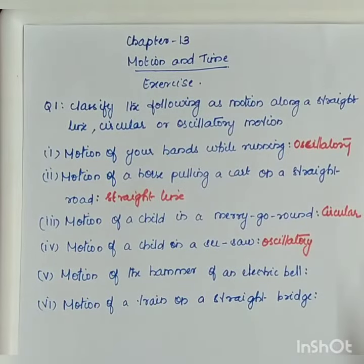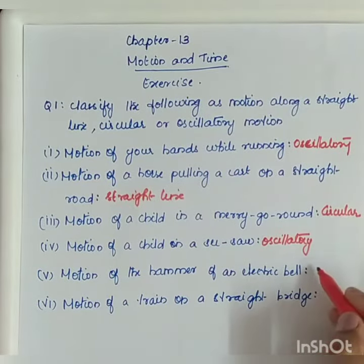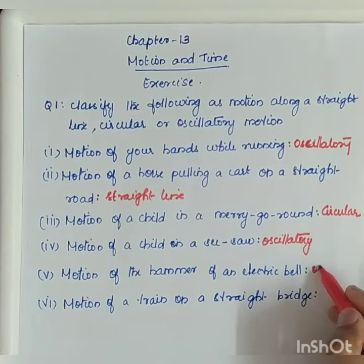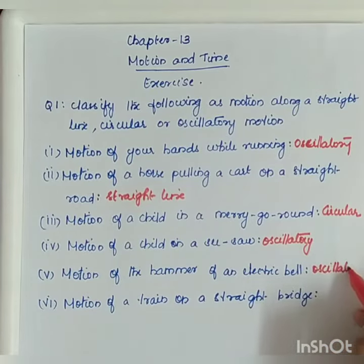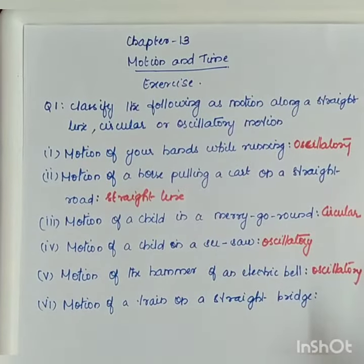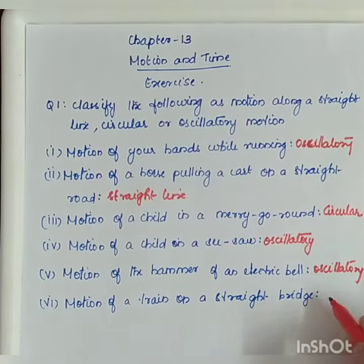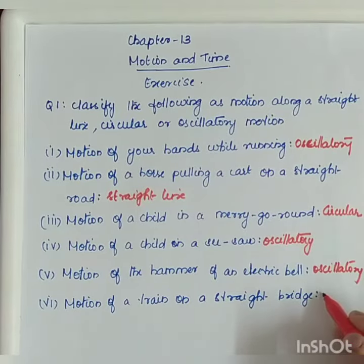Motion of the hammer of an electric bell, which is periodic, so it's oscillatory. Motion of a train on a straight bridge — so it's linear, so it's a straight line.